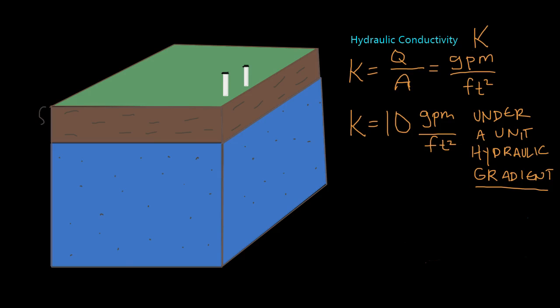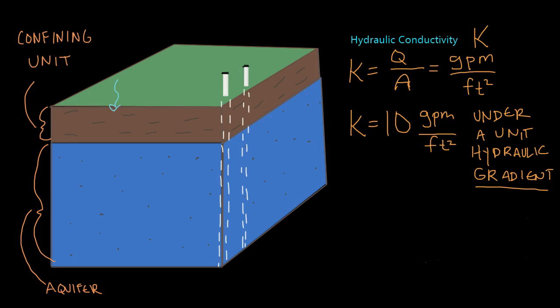Let me change colors. This unit up here is a confining unit. And that means that it's not going to transmit water. And if it does transmit water, it's going to transmit water very slowly and not very well, especially in comparison to our aquifer down here. So you could say that the confining unit has a lower hydraulic conductivity than the aquifer. Therefore, it's going to act as sort of a barrier to any water infiltrating from the top down. It's going to act as a barrier to that. And so here, I've drawn two little wells here at the surface.